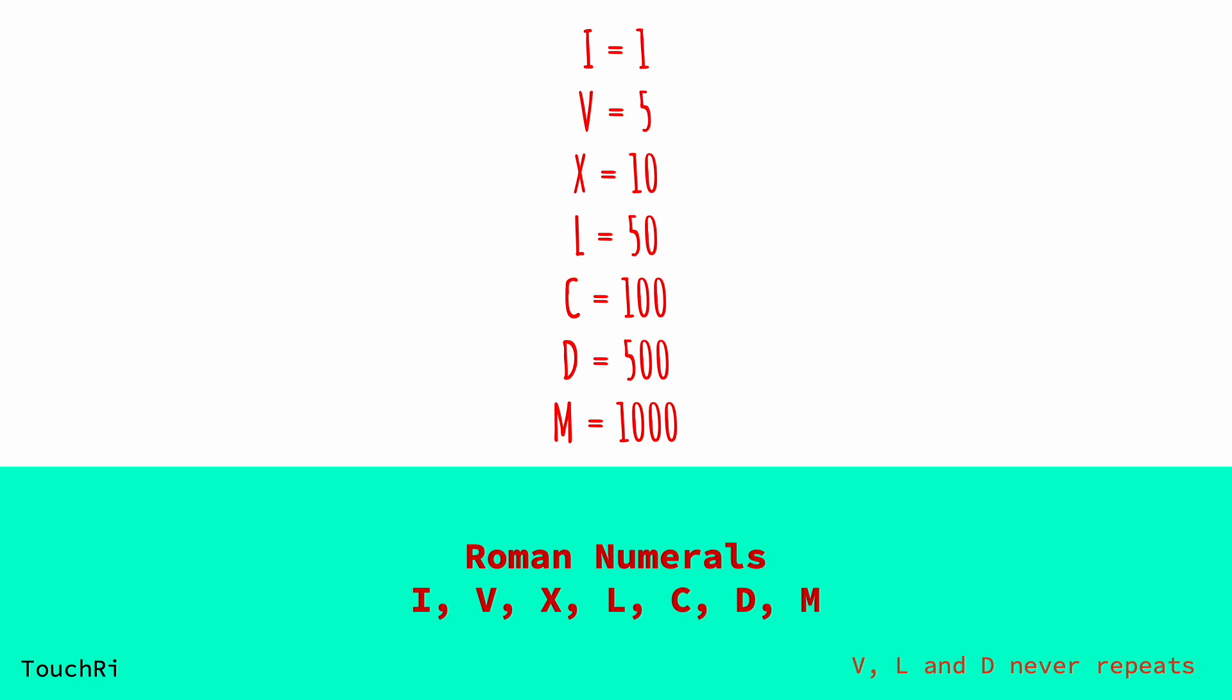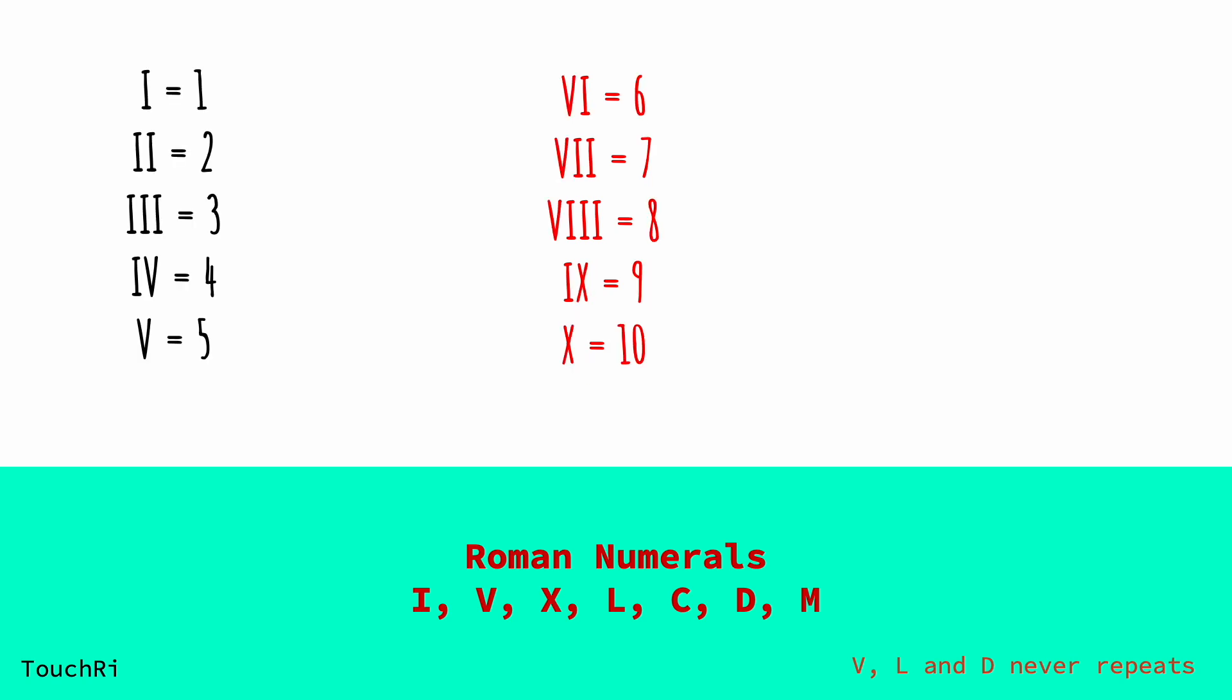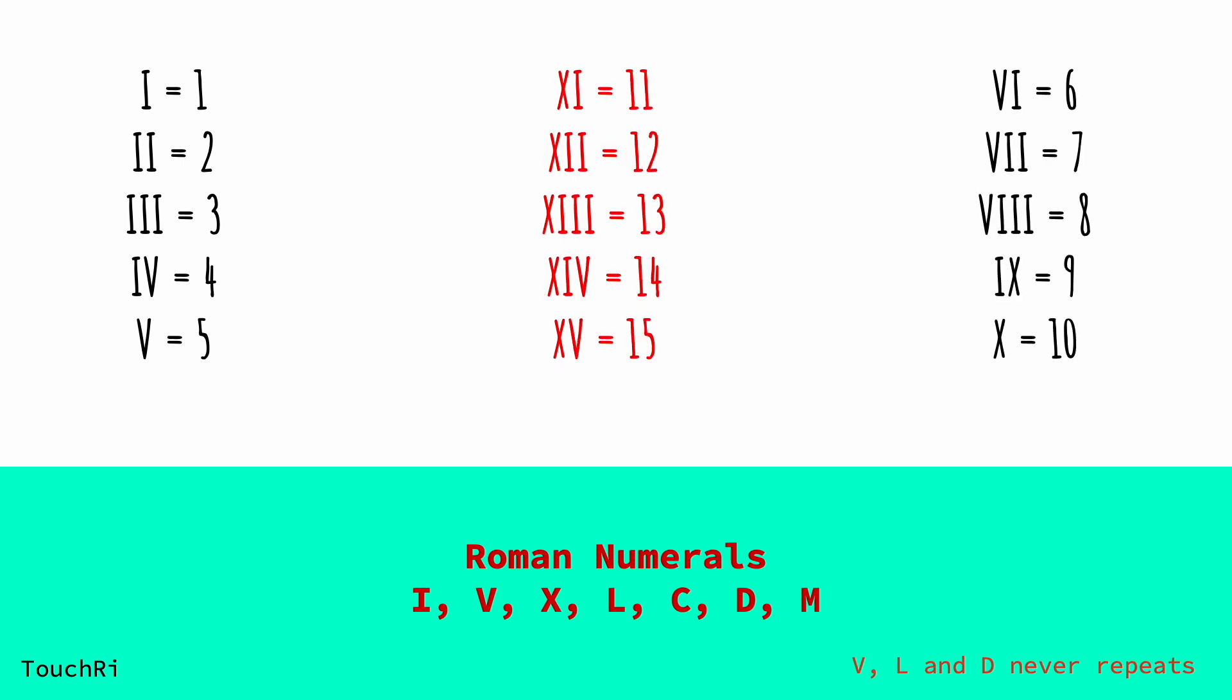Now that we've covered the basics and exceptions, let's tackle larger numbers. Writing big numbers in Roman numerals can seem daunting, but fear not. The Romans had a clever system. The key is to combine symbols to represent thousands, hundreds, tens, and ones.